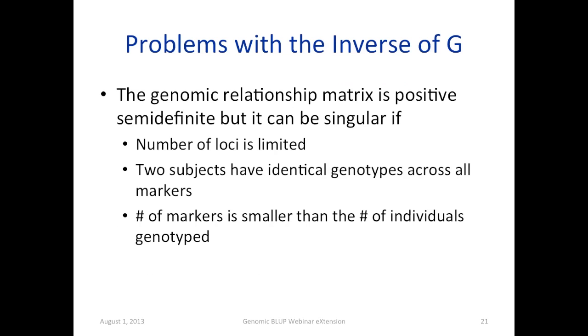So we obtain different methods to calculate the genomic relationships from the markers. There are some other methods. But one of the problems we run into when we obtain the genomic relationship matrix is getting the inverse. It can be singular, especially if the number of loci is limited. You have hundreds of markers, but thousands of individuals. Sometimes two individuals have identical genotypes across all the markers. And that can cause a problem.